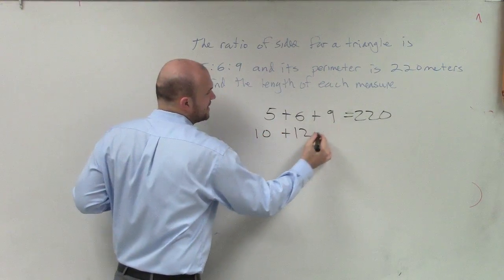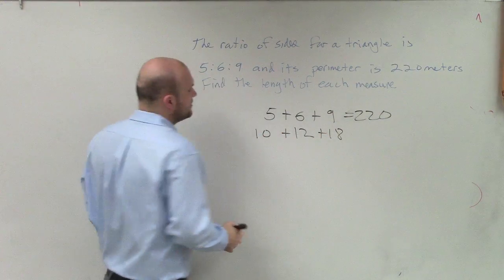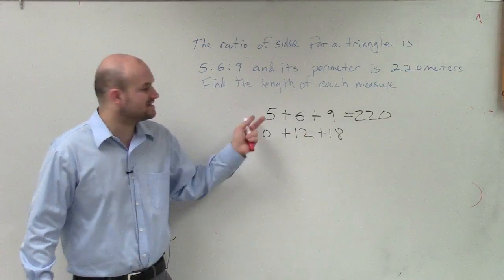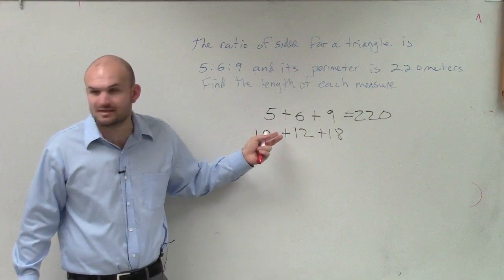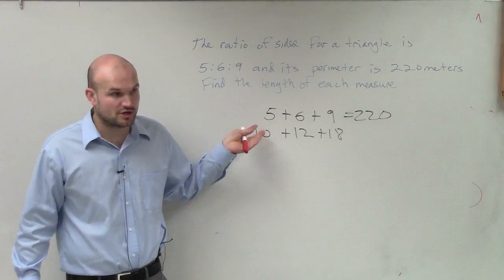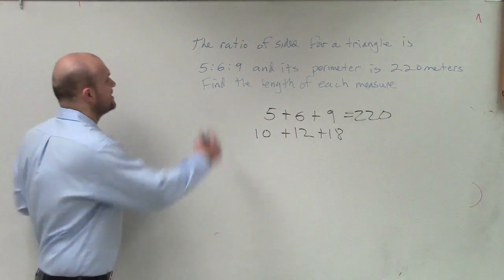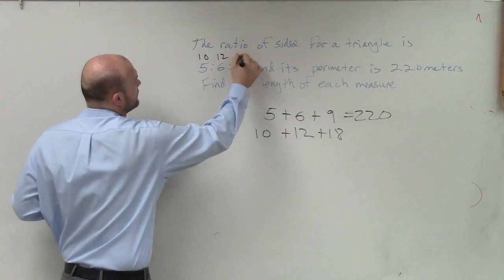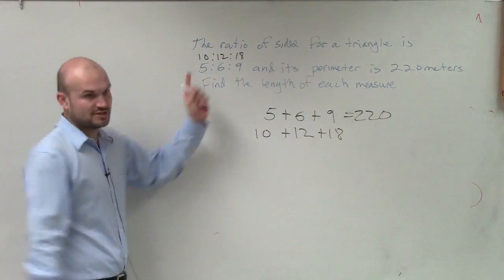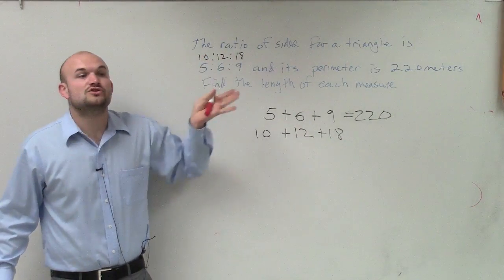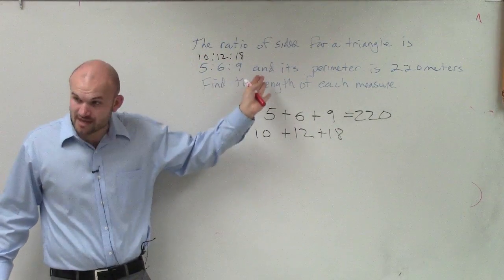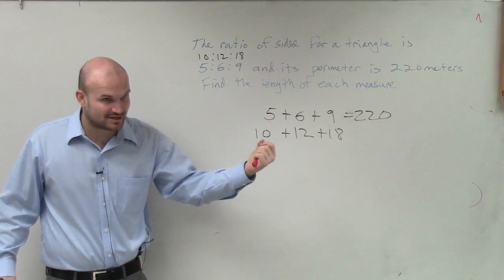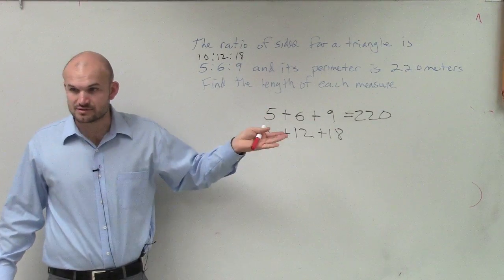Would you guys agree with me that 10, 12, 18 is the same as the ratio 5, 6, and 9? Yeah. Those are equivalent ratios. If I said 10, 12, 18, do you guys agree those are equivalent ratios? So as long as I multiply each of these numbers by the same factor, I produce equivalent ratios.